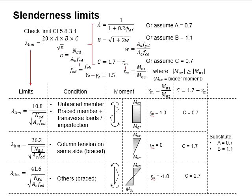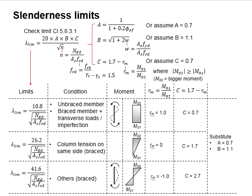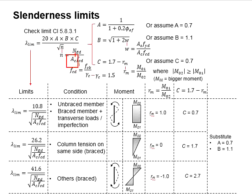This slide shows the equations to check for the slenderness limit. The equations for the slenderness limit are given in Eurocode 2, Clause 5.8.3.1. They are expressed as functions of A, B, C, and the square root of N, where N represents the ratio of the applied load divided by the axial resistance of the column. The axial resistance is determined by the area of the column multiplied by the design stress.